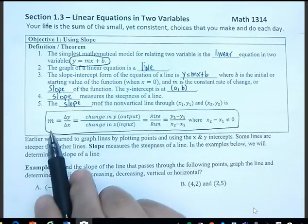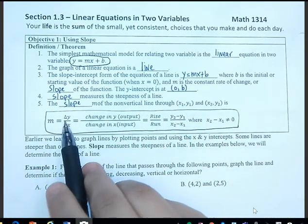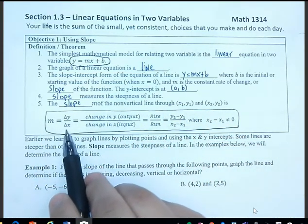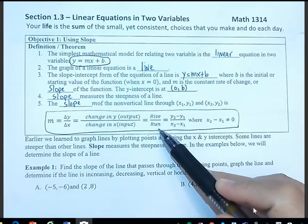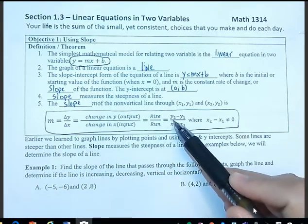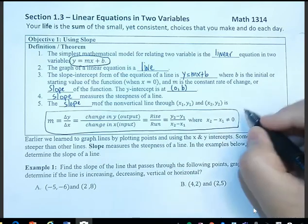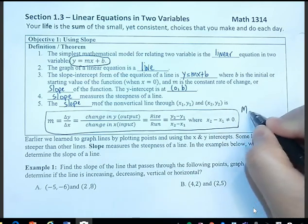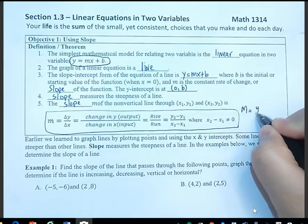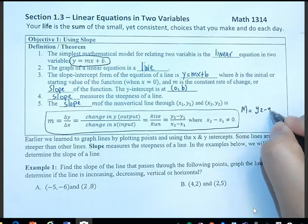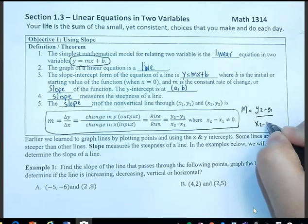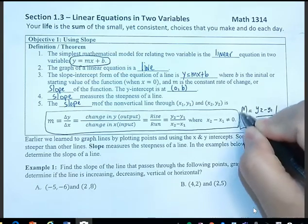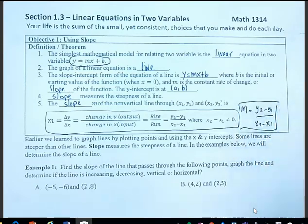m is the change in y divided by the change in x, and sometimes we say rise over run. So the slope is y₂ minus y₁ divided by x₂ minus x₁ — this is your formula.